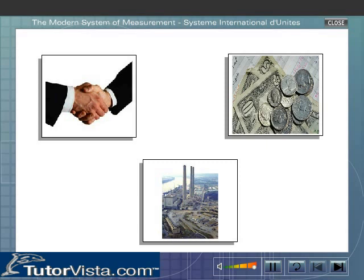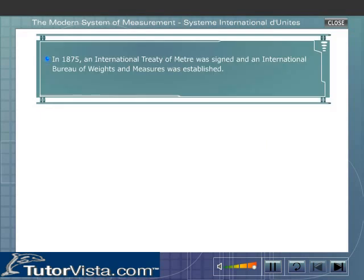In 1875, an International Treaty of Metre was signed and an International Bureau of Weights and Measures was established.